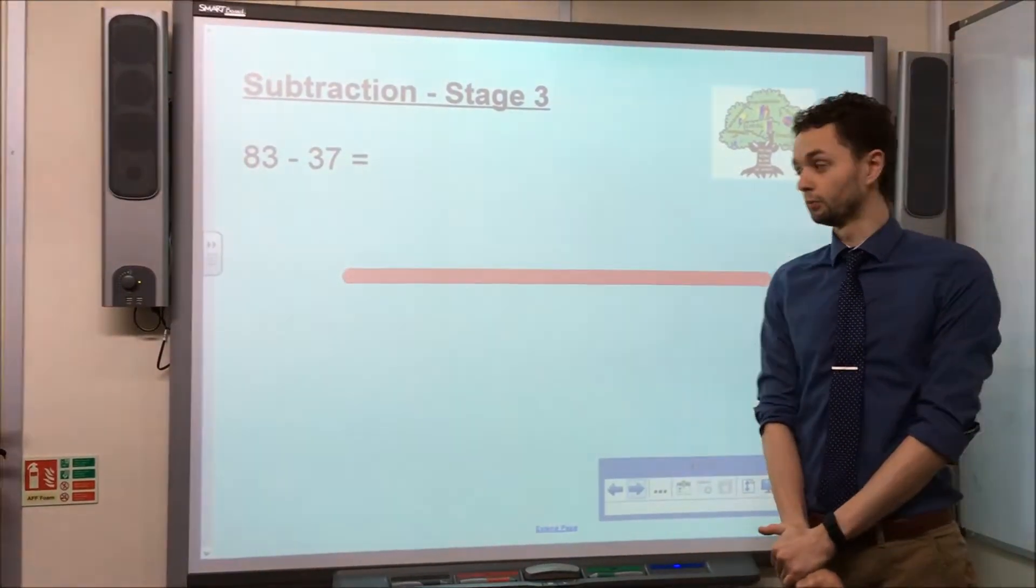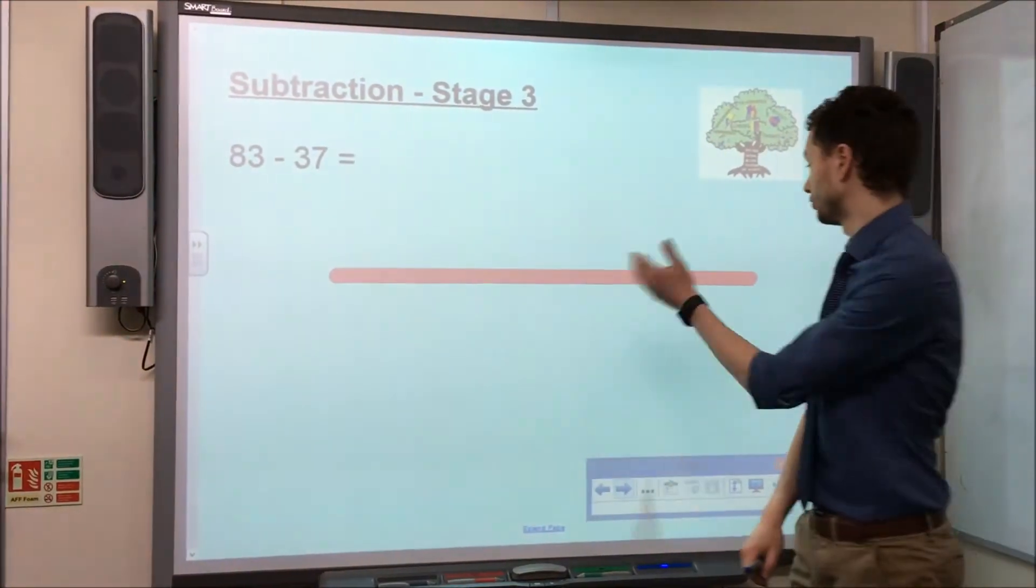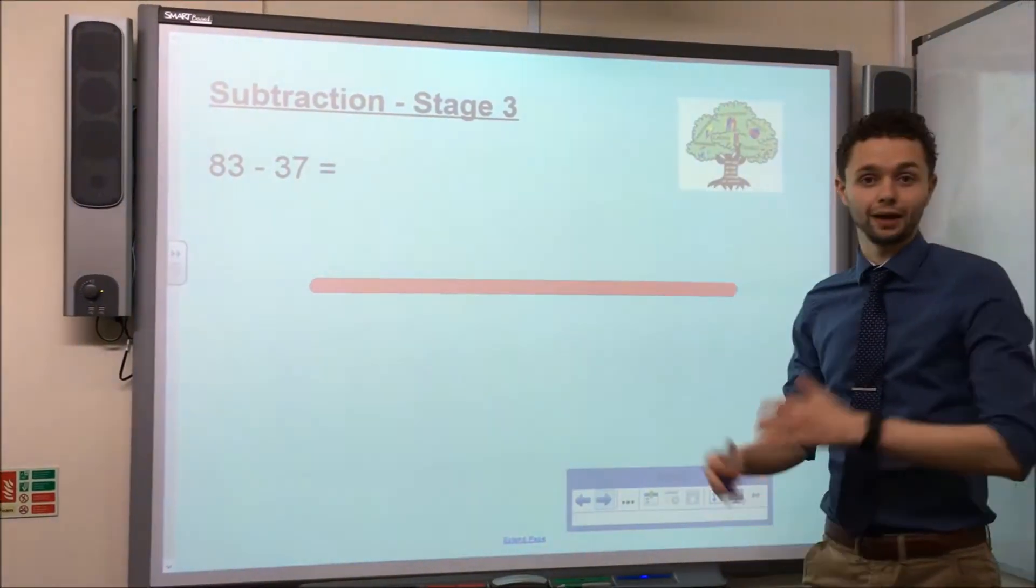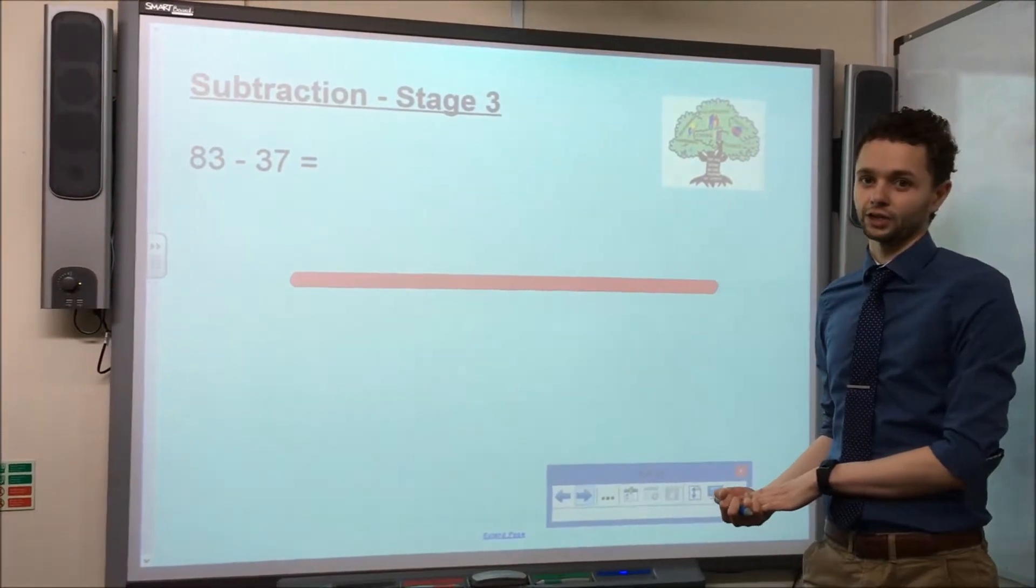Like Stage 2, it involves using a number line. However, for Stage 3, the number line is blank and the children add the numbers themselves as they work through the calculation.